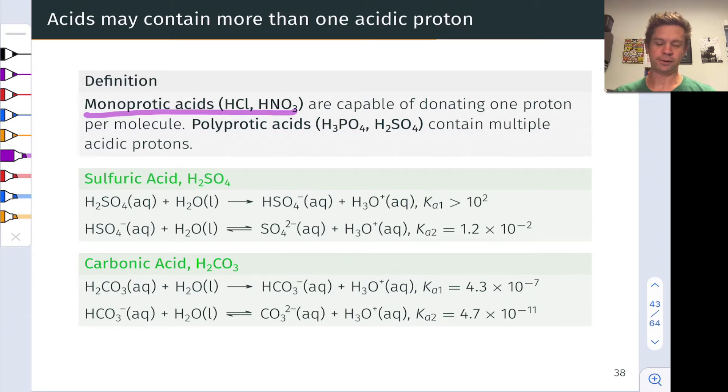In polyprotic acids, that leading hydrogen has a subscript that is not equal to 1, so for example in phosphoric acid, H3PO4, we've got three ionizable protons.